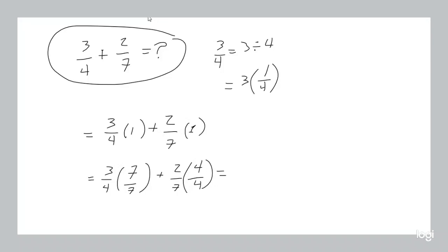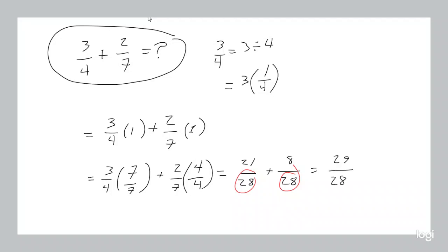Now watch what happens. I'm multiplying these two fractions in these two terms. So you multiply the tops: 3 times 7 is 21. You multiply the bottoms: 4 times 7 is 28. Plus multiply the tops: 2 times 4 is 8. Multiply the bottoms: 7 times 4 is 28. Look at that — we have the same denominator: 28 and 28. Now we can just add: 21 plus 8 is 29, and the denominator stays the same.